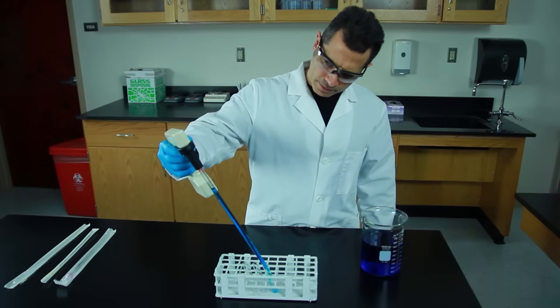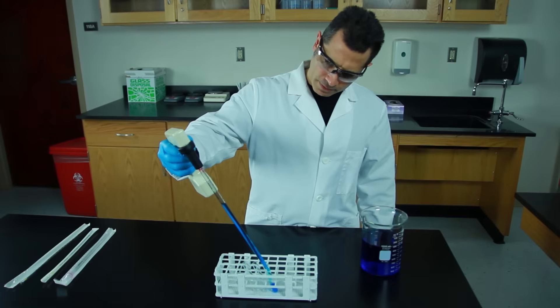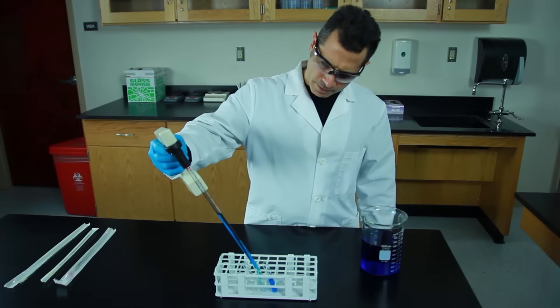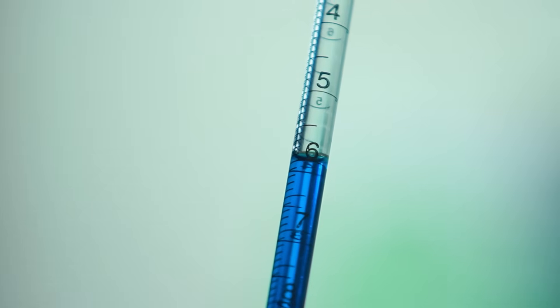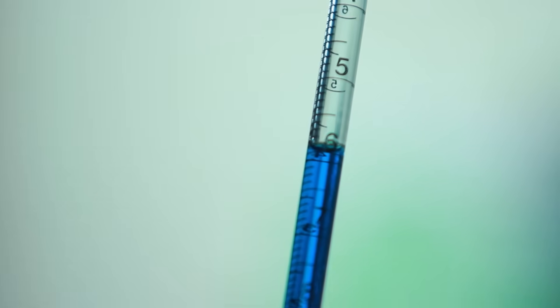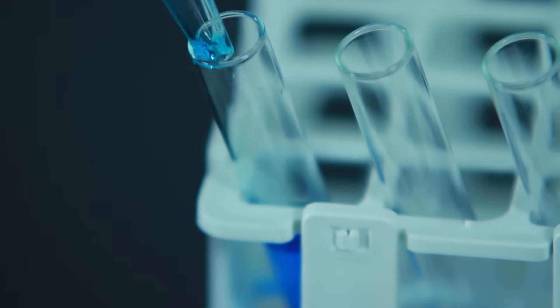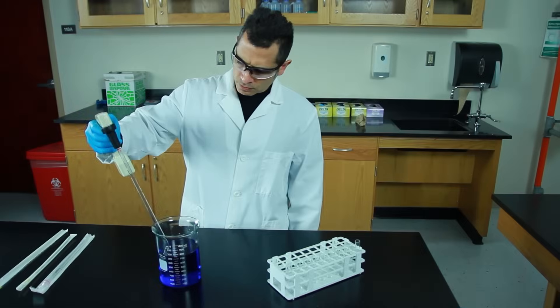Transfer 4 mils to the first tube. The meniscus is now at the 2 milliliter mark. Transfer 4 mils to the second tube. The meniscus is now at the 6 milliliter mark. Finally transfer the remaining 4 mils to the third tube and be sure to blow out the pipette.